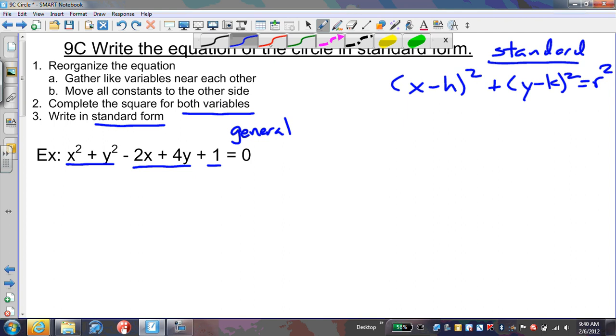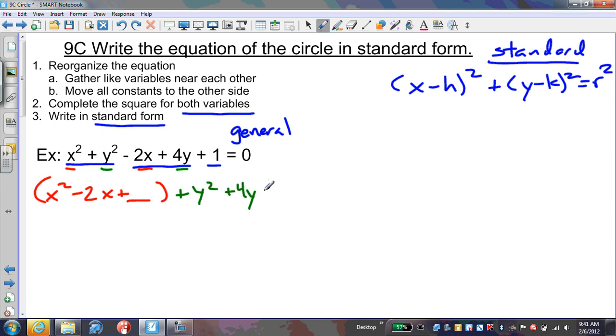Let's reorganize the information. We have x² - 2x plus a blank for all the x's. Then for the y's, we have y² + 4y plus a blank. Those go together. On the other side of the equation, we move the 1 to get negative 1.